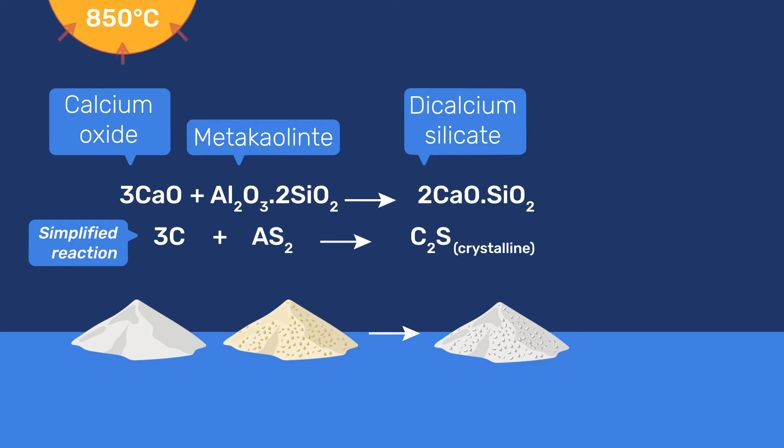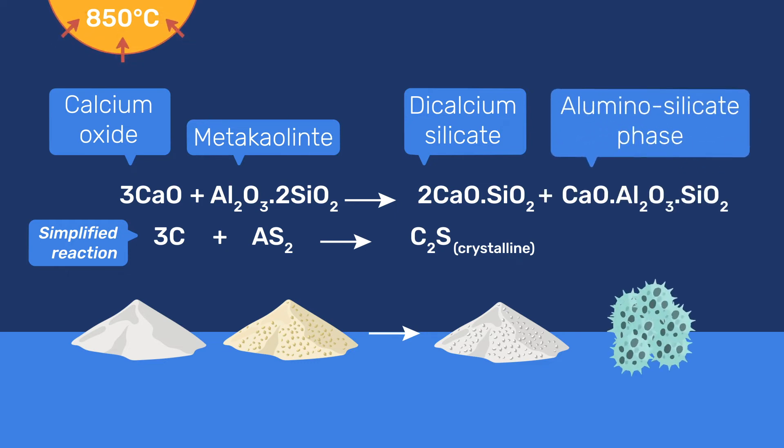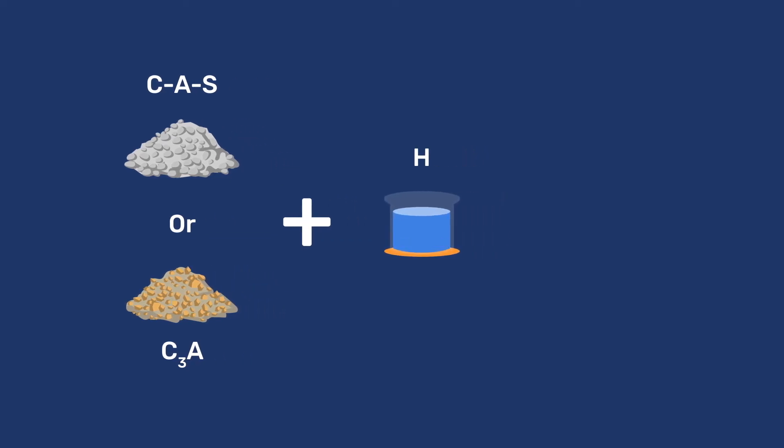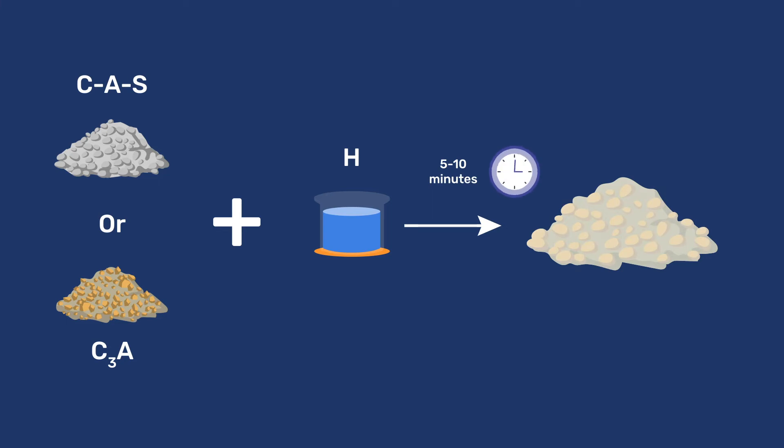It also leaves a mainly amorphous calcium aluminosilicate phase as side product. The stoichiometry of this aluminosilicate is variable, which is why we best note it C-A-S. This amorphous C-A-S reacts very rapidly with water.